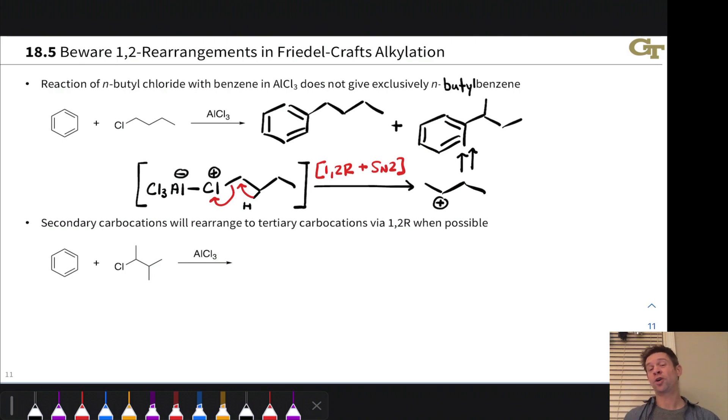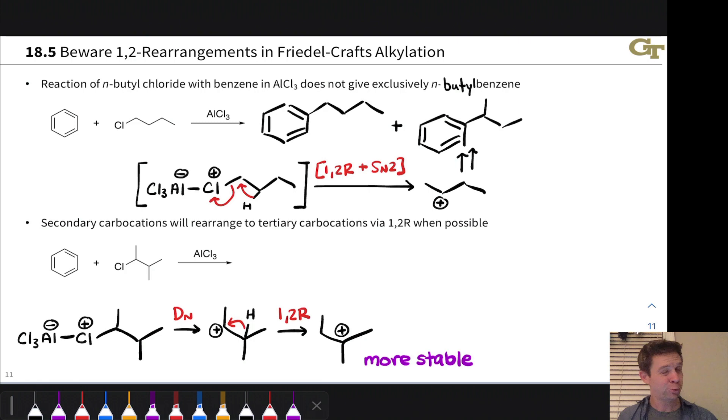Given the chance, secondary carbocations can even rearrange to tertiary carbocations if the structural conditions are right. And that's shown in this example. So let's start with the Lewis acid-coordinated alkyl halide. Let's imagine that can lose the leaving group AlCl4- to give a carbocation. But we've got the conditions for a 1-2 rearrangement. We've got a CH bond adjacent to a trigonal carbocation center. And that CH bond can migrate. And when it does, we end up at a tertiary carbocation that's more stable than the secondary carbocation we started out with. So this is an energetically downhill process to produce a tertiary carbocation.